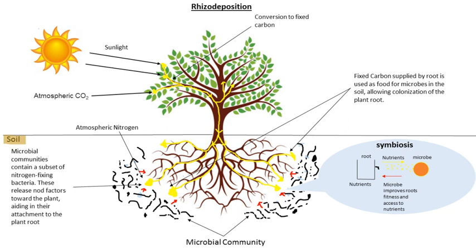Mycorrhizal fungi can extend a great distance into bulk soil, thereby increasing the root system's reach and surface area, enabling mycorrhizal fungi to acquire a large percentage of their host plants' nutrients. In some ecosystems, up to 80% of plant nitrogen and 90% of plant phosphorus is acquired by mycorrhizal fungi. In return, plants may allocate approximately 20–40% of their carbon to mycorrhizae.